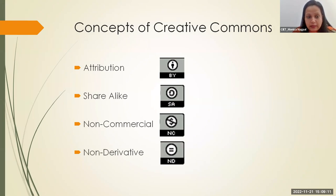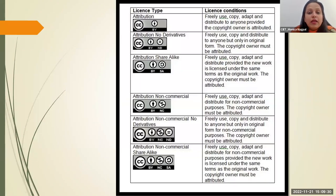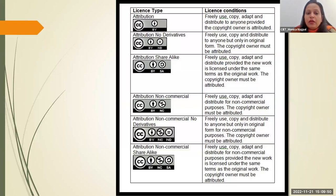Using these four rights, Creative Commons derives six licenses. The first is CC BY — CC means Creative Commons, BY means attribution. This means freely use the resource with no other permission required. The only requirement is: if you are using somebody's resource, please give credit to that person.